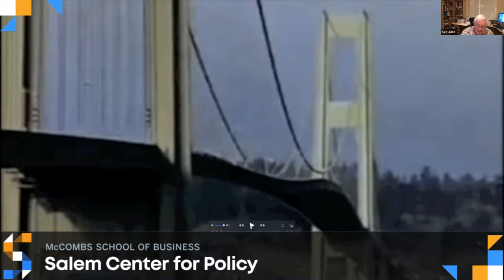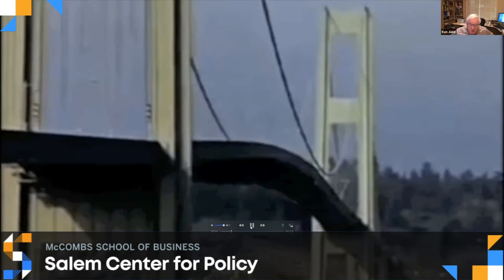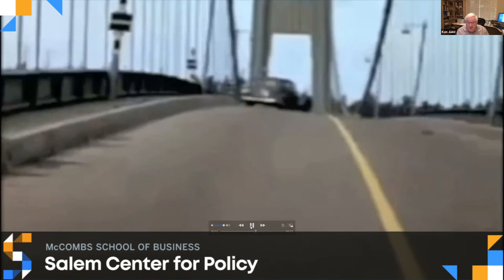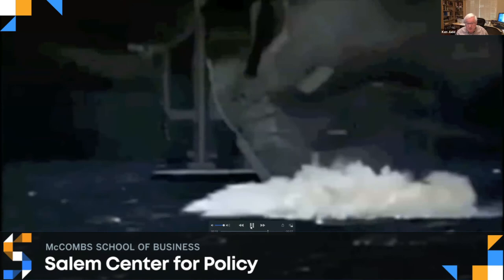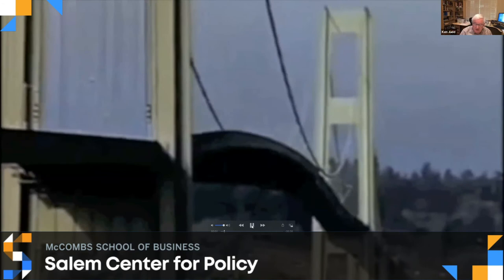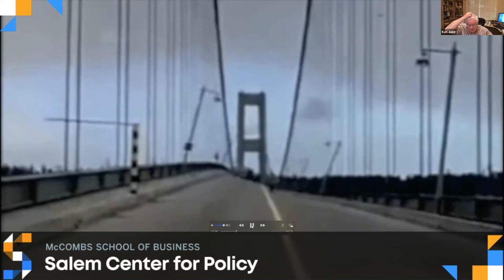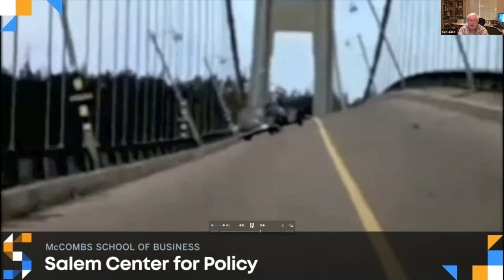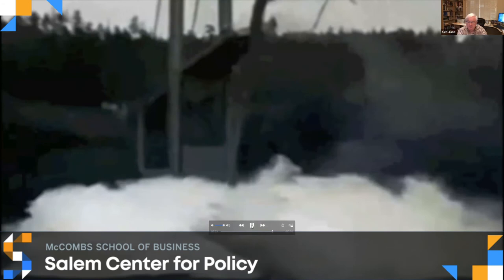My talk is going to begin with this video of a bridge which obviously is having some problems, and there's some idiot who left his car on the bridge. This is the Tacoma Narrows Bridge — or rather, it was the Tacoma Narrows Bridge. It was built in 1940 near Tacoma, Washington, spanning a gorge with considerable depth below.